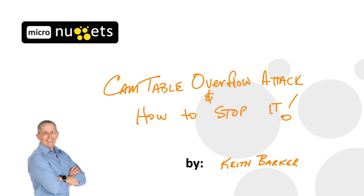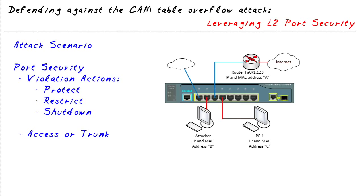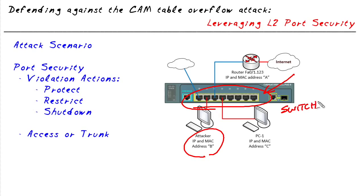CAM table overflow attacks and how to stop them. Imagine an attacker or a disgruntled employee connected to the network who wants to eavesdrop on all conversations happening on a switch. The challenge is that a switch forwards traffic only to the ports that need it, so if a PC is communicating out to the internet, that traffic wouldn't be forwarded to the attacker's machine — one of the benefits of using a layer 2 switch.